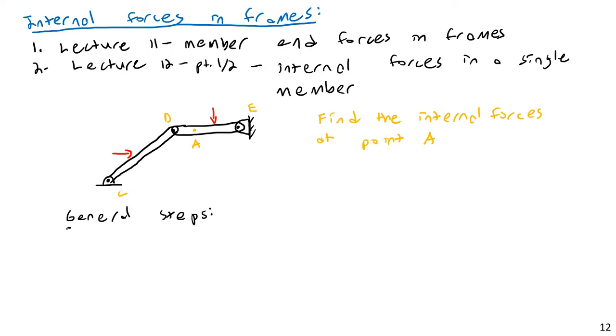So the general steps: one, we have to solve for the external member forces, or member end forces, what I should say. Find member end forces. And this is basically all the stuff we looked at on lecture 11. This is the lecture 11 material. So you're going to separate the frame into its constituent parts. And you could start with a global free-body diagram if you wanted. There are any number of ways you could do this.